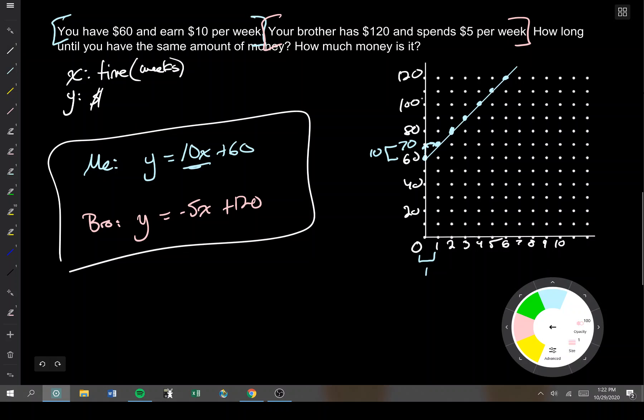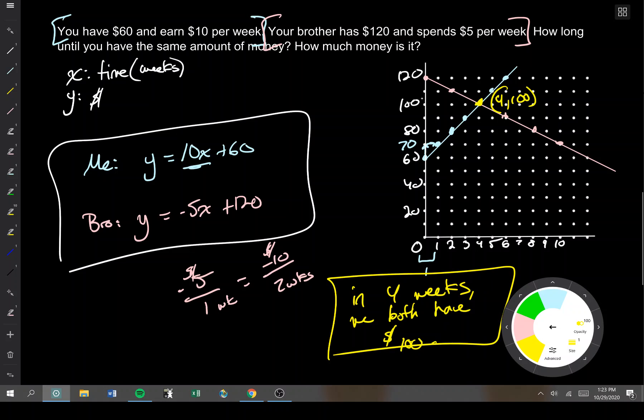Now let's do our brother's equation. He's starting at 120, but he's losing $5 a week. Well, losing $5 every one week is the same as losing $10 every two weeks. And I like to have the number 10 because this is still counting by tens over here. So I'm going to go down 10, right 2, down 10, right 2. His graph looks like this. We intersected at the point 4, 100. So that means in 4 weeks, we both have $100. Because x is weeks, time, and y is money. 4 weeks, $100.